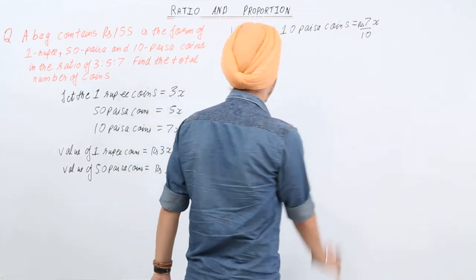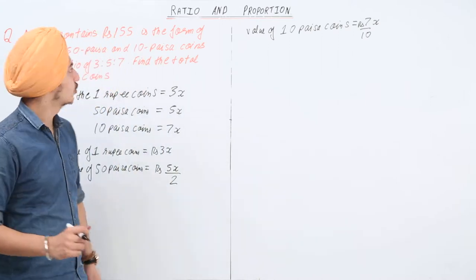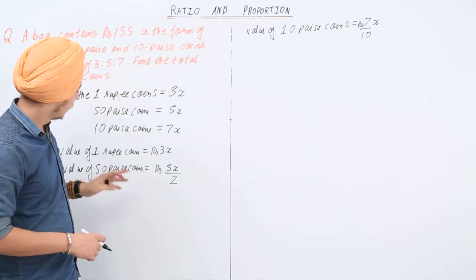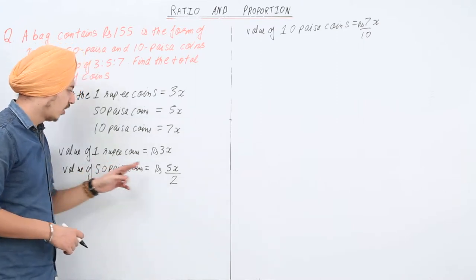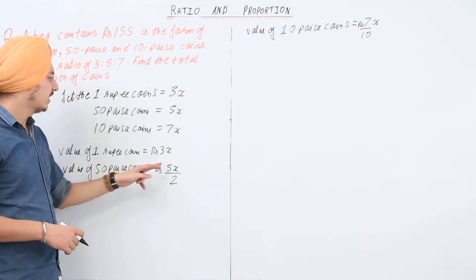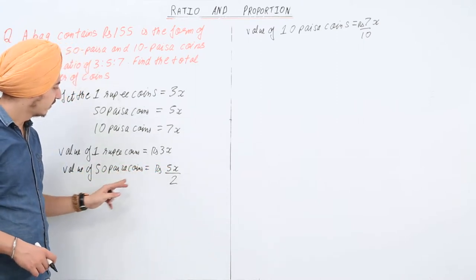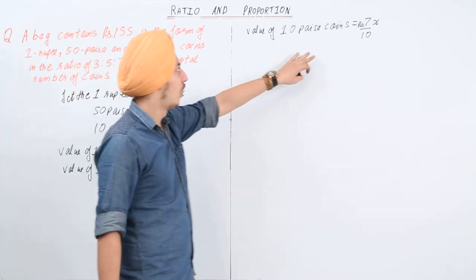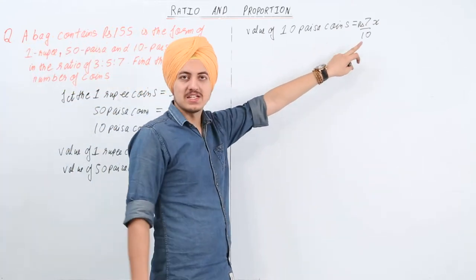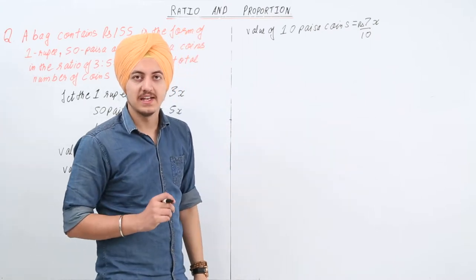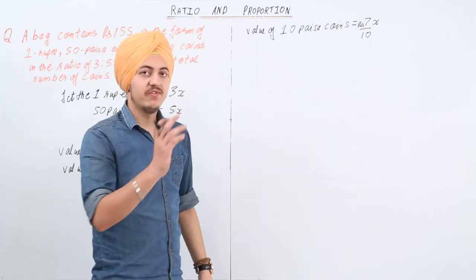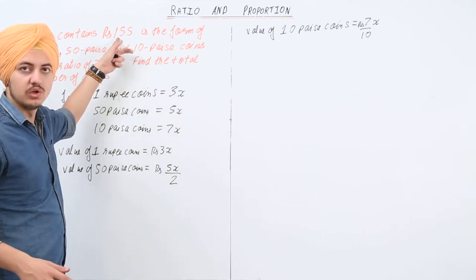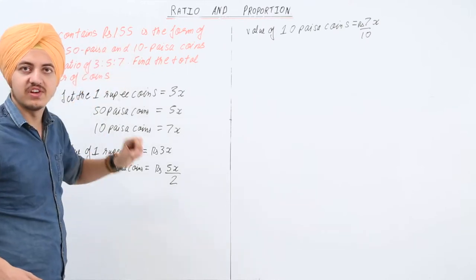Now, according to the question, we know that the total money in the bag is 155 rupees. The total value of 1 rupee coins is 3x, total value of 50 paisa coins is 5x/2, and total value of 10 paisa coins is 7x/10. If we add all these three values, we get 155 rupees.